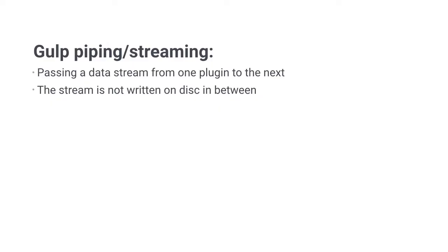A very big difference between Gulp and the other task runners out there is the way it handles file operations. Gulp will essentially pass a data stream from one plugin to the next without actually writing that stream to a temporary file in between these tasks. That's called piping or streaming.